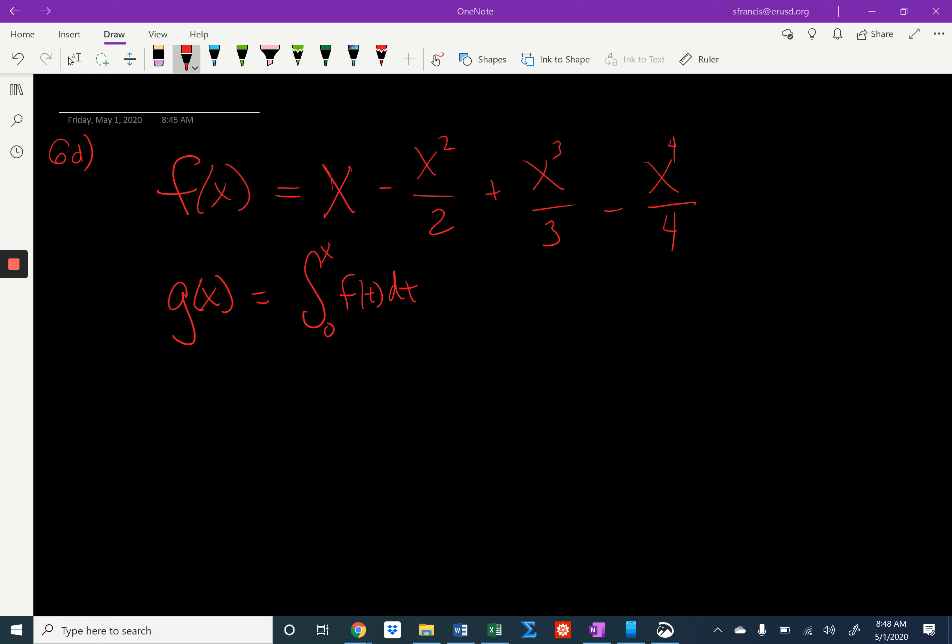Part C, they tell us that g of x is the integral from 0 to x of f of t dt, and they have us find the first four non-zero terms and the general term. I'm not going to help with that completely, but we're going to need at least the non-general terms, the first four non-zero terms, to help work out Part D.